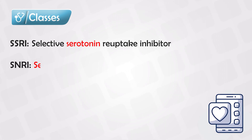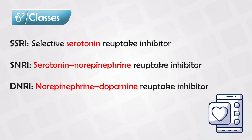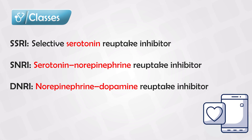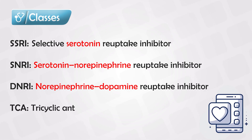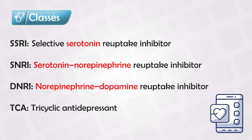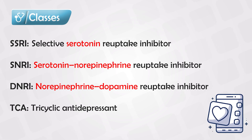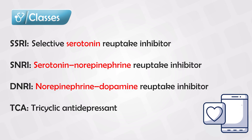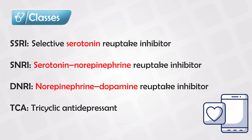The other classes are Serotonin-Norepinephrine Reuptake Inhibitors and Dopamine-Norepinephrine Reuptake Inhibitors. We also have some other medications with broader effects, such as TCAs or tricyclic antidepressants. These are very powerful because they have effects not only in the brain but also in the body. They block the reuptake of serotonin and norepinephrine, but they also cause the release of histamine and work on the alpha and muscarinic receptors.